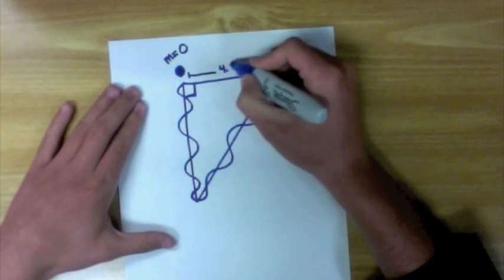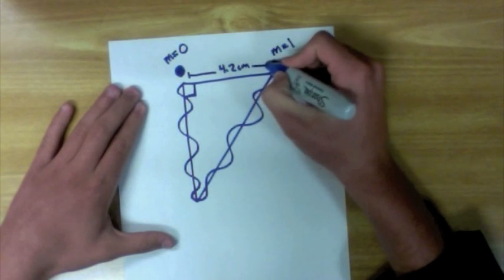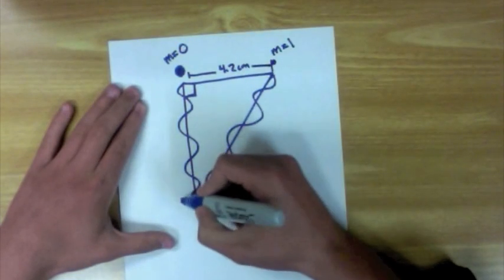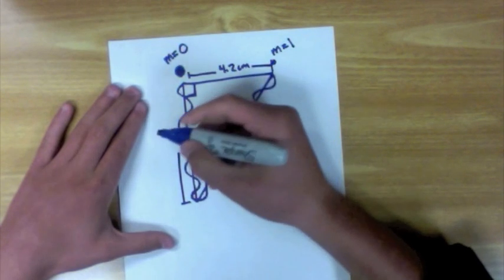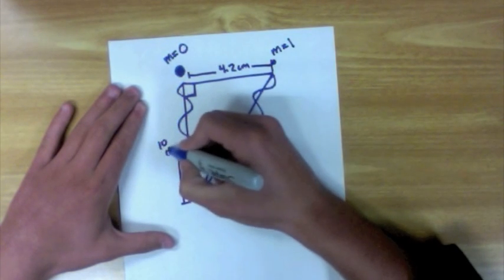As we measured earlier, the distance between the two points is 4.2 centimeters, and the distance from the diffraction grating to the viewing screen is 10 centimeters.